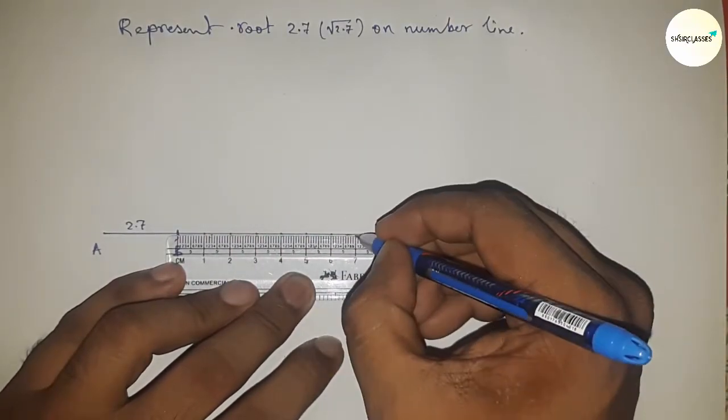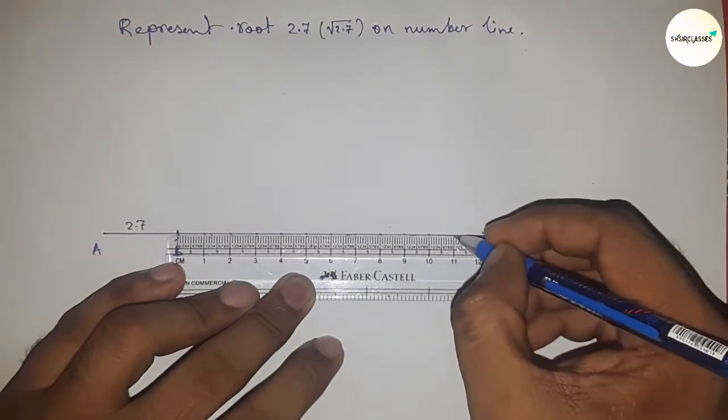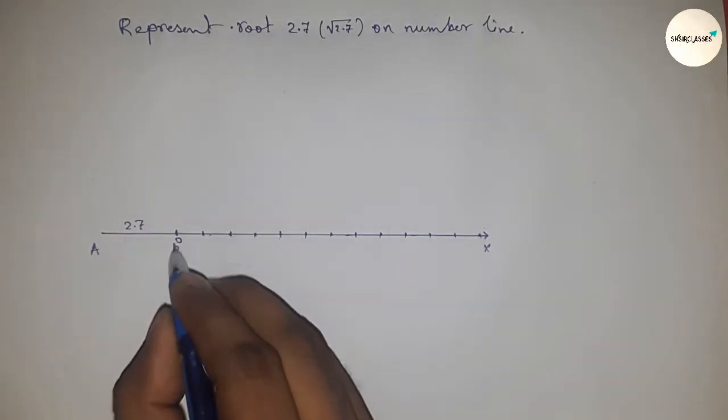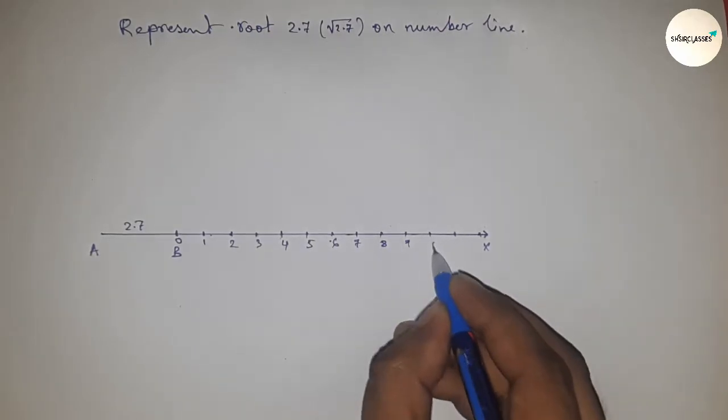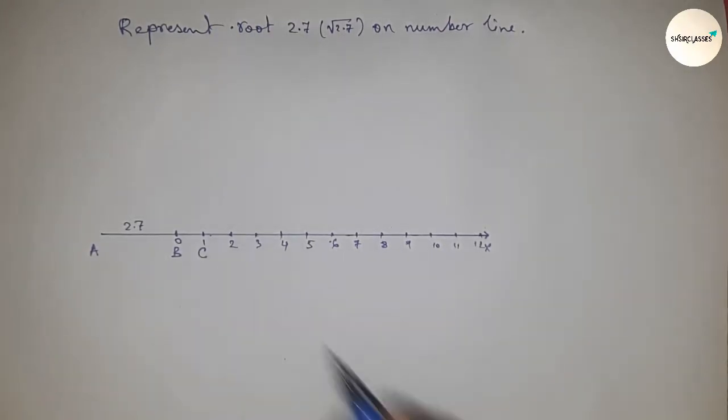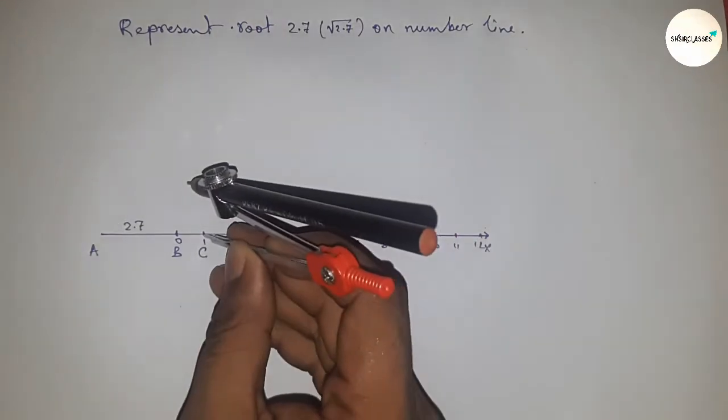Using the scale, mark all the numbers on the line: 0, 1, 2, 3, 4, 5, 6, and so on. Next, this is point C. Next we have to bisect the line AC.